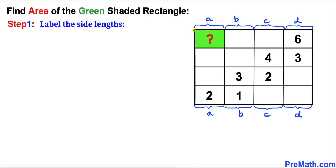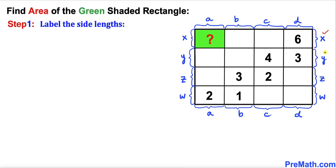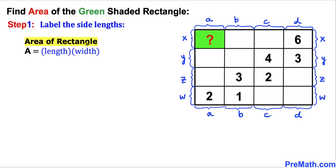Now let me label the remaining side lengths. I'll call this side length x, this side length y, this side length z, and this side length w. These side lengths are going to become x, y, z, and w as well. Recalling the area of a rectangle formula — area equals length times width — let's focus on the green rectangle. Its dimensions are a and x, so its area is a times x, and this is what we are going to find.